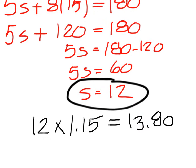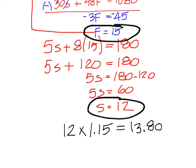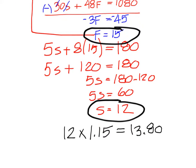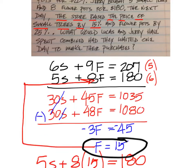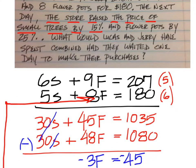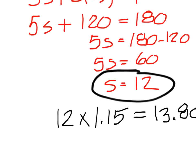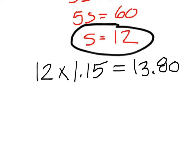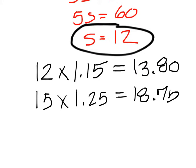We also know that the price of a flower pot is 15. Flower pots went up by 25%, so the flower pot was 15 multiplied by 1.25. 15 times 1.25 is 18.75.